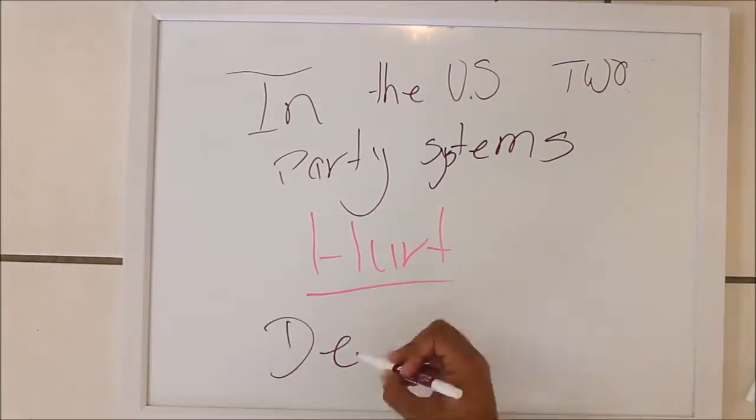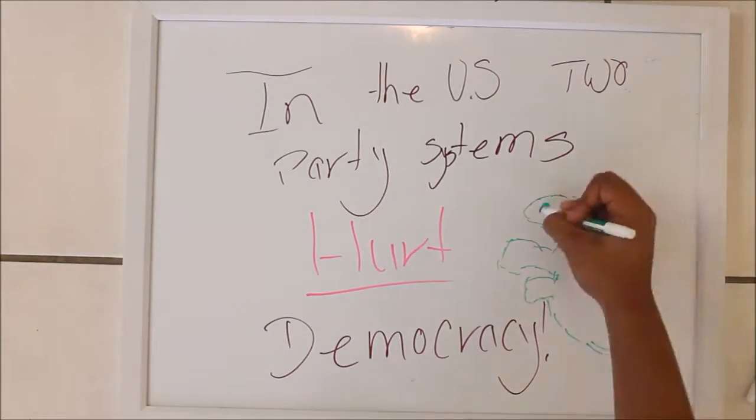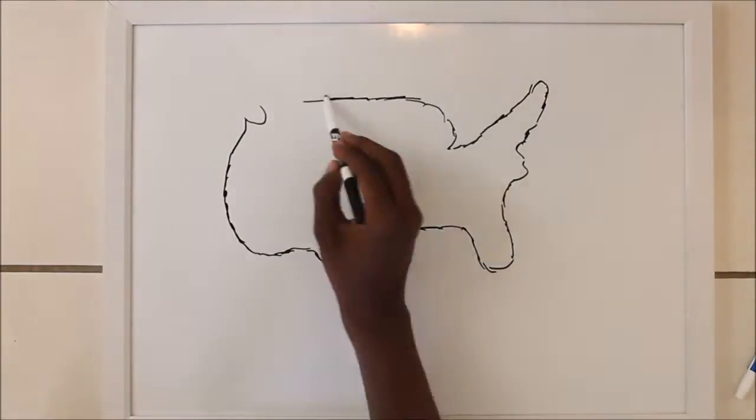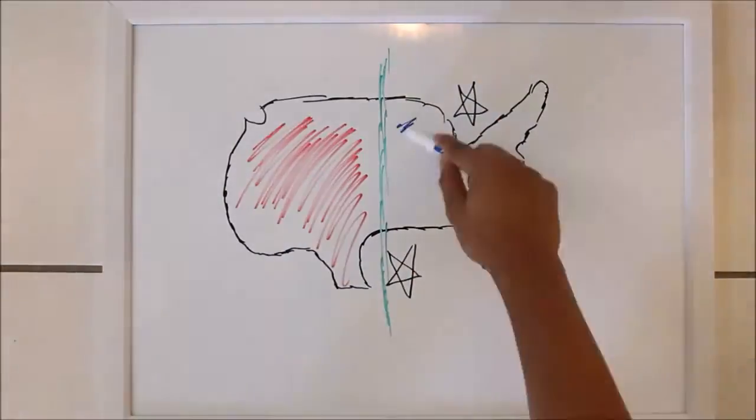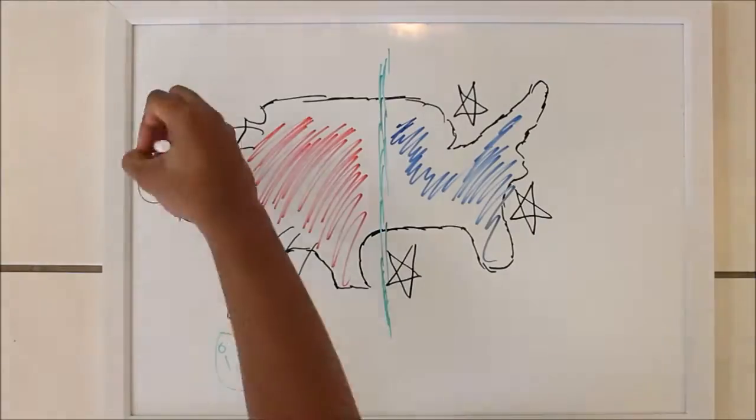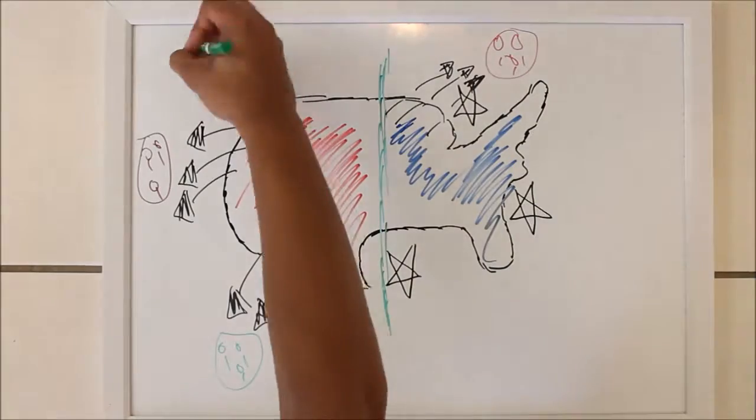In the United States, the two-party system hurts democracy. James Madison, a founding father of our democracy, warned later generations of the effect that factions, known today as political parties, would cause if implemented in the government.